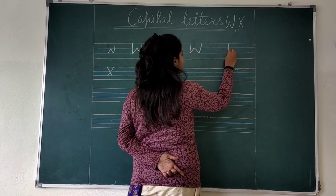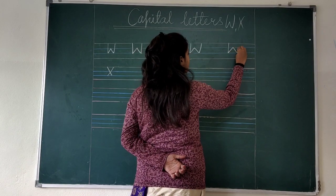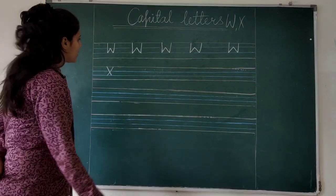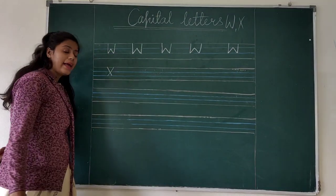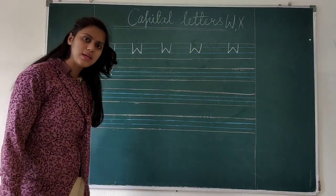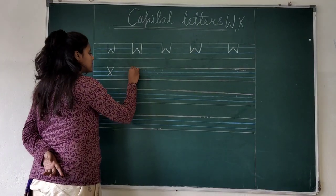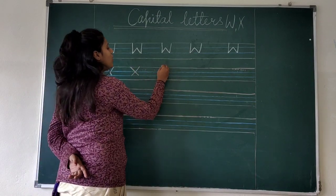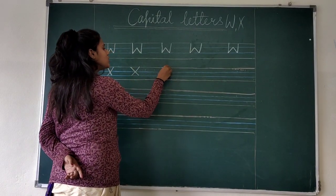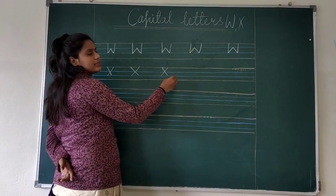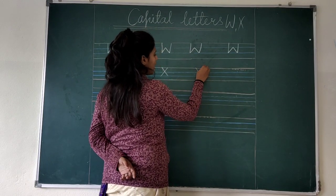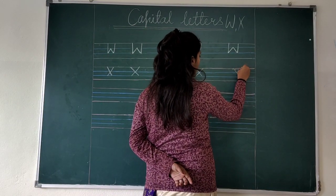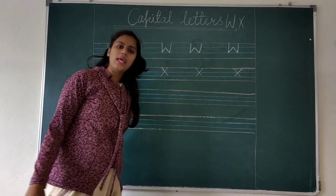One standing line, standing line, another standing line, one more standing line. Now X for Xmas. One standing line, two standing line. One standing line, two standing line. This is how we write X for Xmas.